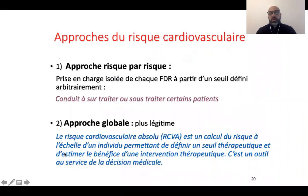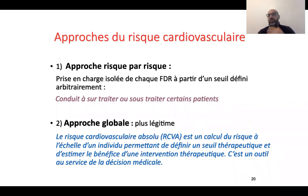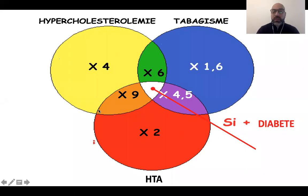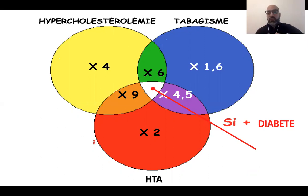J'insiste sur cette notion : ce sont des facteurs de risque qu'on ne va pas additionner. L'approche risque par risque — il est diabétique, hypertendu et il fume, donc il a trois fois plus de risque — est fausse. C'est plutôt une approche globale : avec du cholestérol seul, vous avez 4 fois plus de risque ; tabagique seul, 2 fois plus ; tabagique avec cholestérol, 6 fois plus ; ajoutez l'hypertension artérielle et on monte rapidement à 16 fois plus de risque. Ce sont donc des facteurs qui ne s'additionnent pas, c'est plutôt exponentiel.